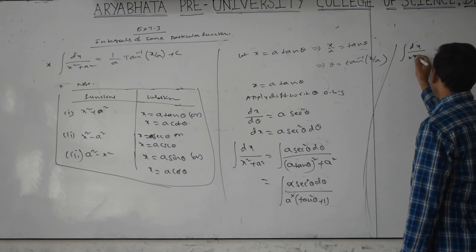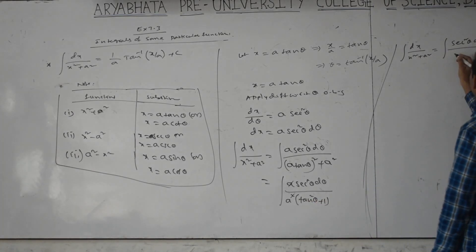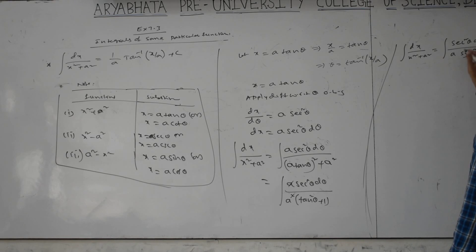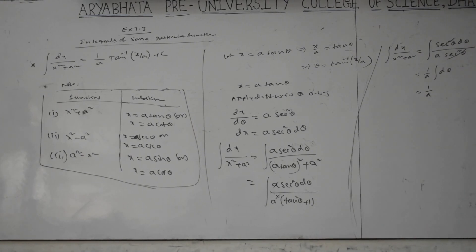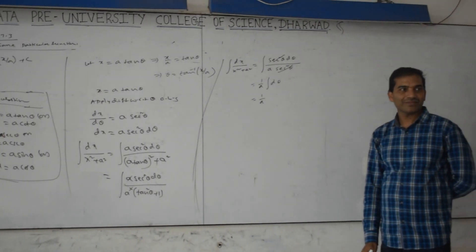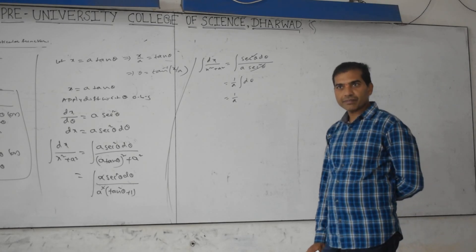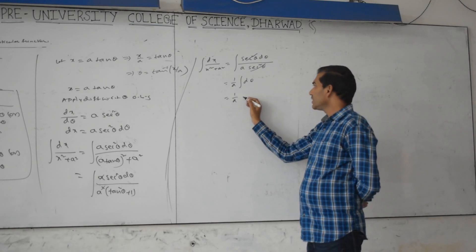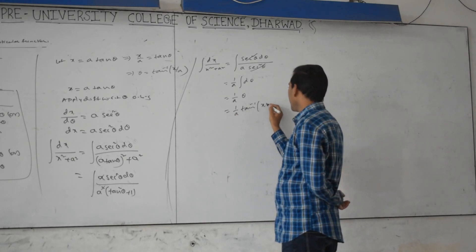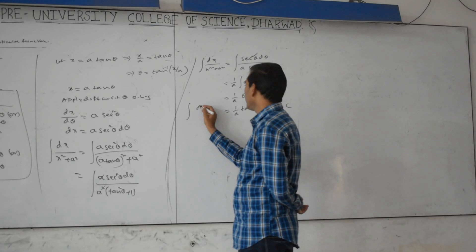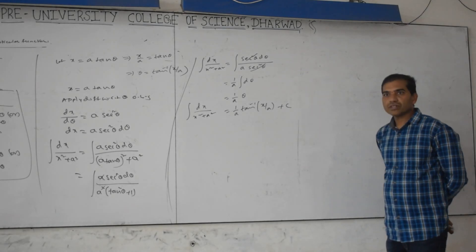Integration of dx by (x² plus a²) equals integration of sec²θ dθ by (1 plus tan²θ) equals sec²θ — using 1 plus tan²θ equals sec²θ. Sec²θ gets cancelled. 1 by a is constant, integration of dθ equals θ. So θ equals tan inverse of x by a, giving us 1 by a times tan inverse of x by a plus c. This is the formula: ∫dx/(x² + a²) = (1/a) tan⁻¹(x/a) + c.